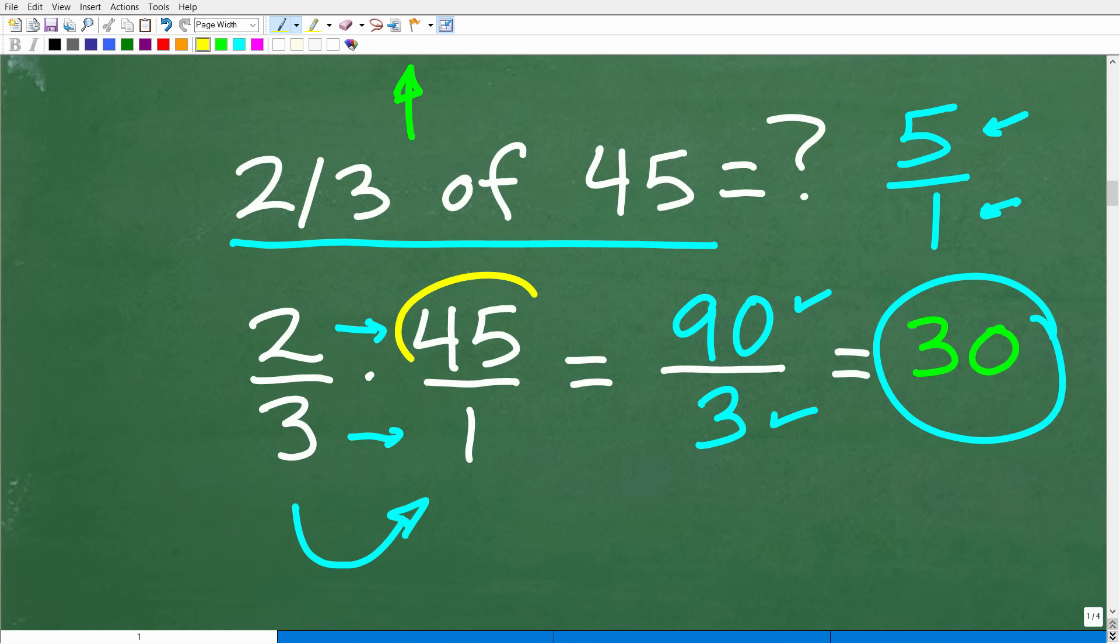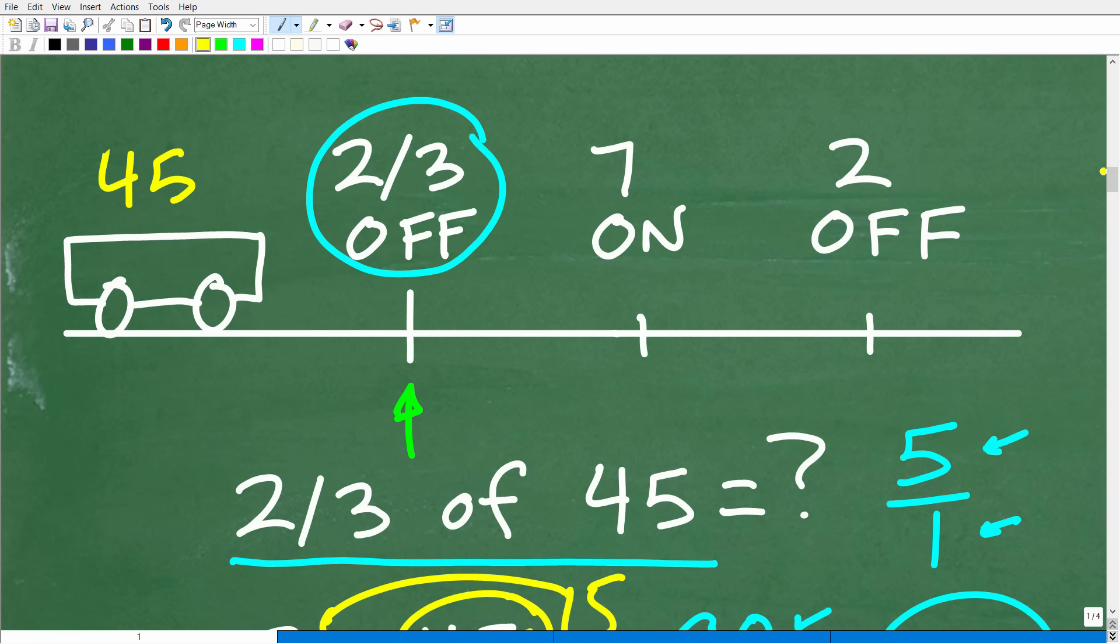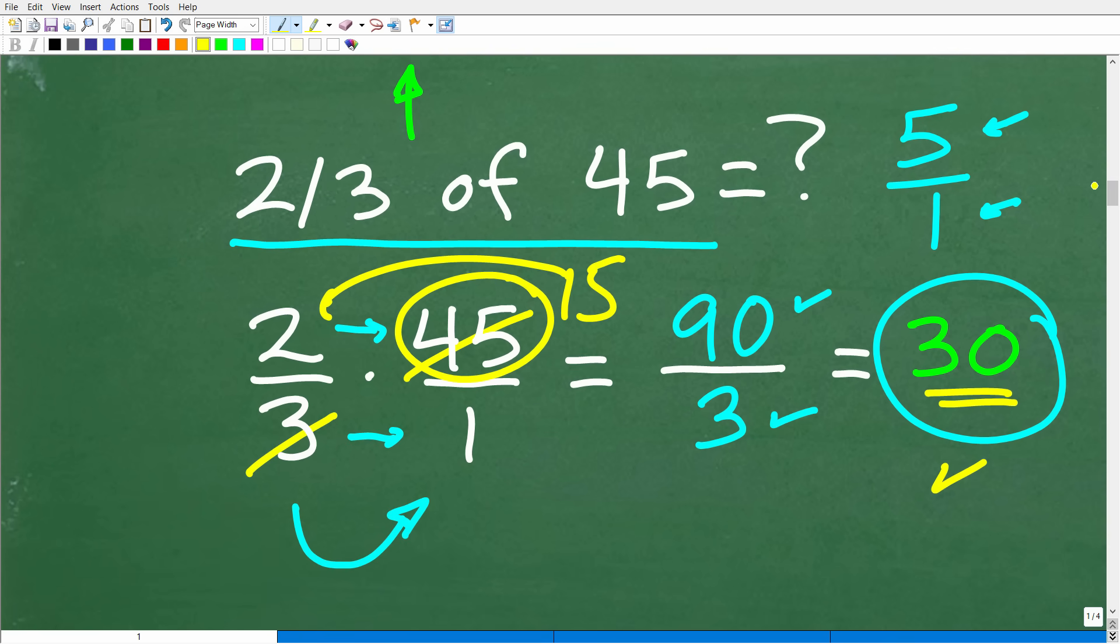Now, some of you could have said, well, look, I know 3 goes into 45, 15 times, and 15 times 2 is 30. And that is fantastic as well. So either way, as long as you came out with 30 as the right answer, well, then we are on our road, if you will, to figuring out the solution. Okay, so what did we just do here, though? We have this bus. 45 people, two-thirds of these folks got off. And we just figured out that's 30, right?